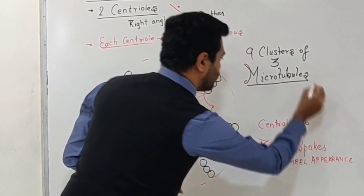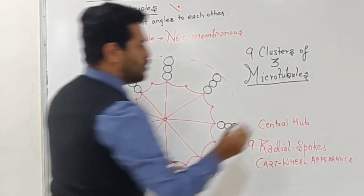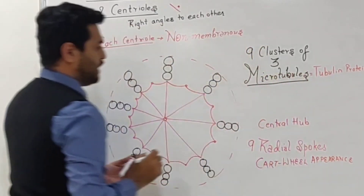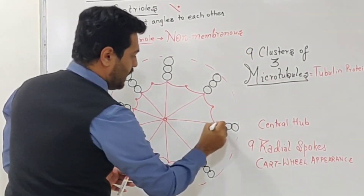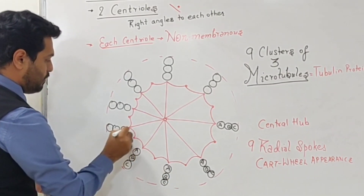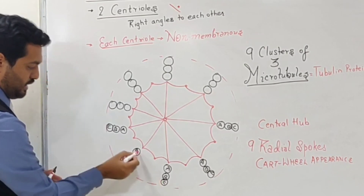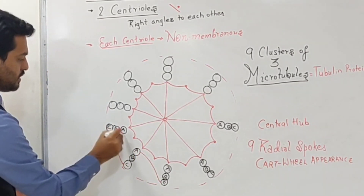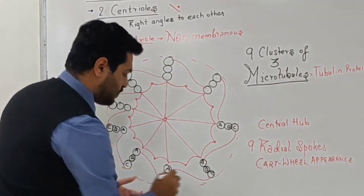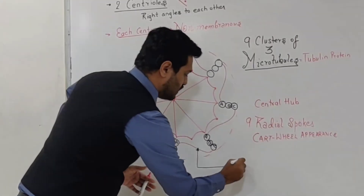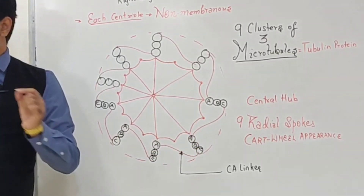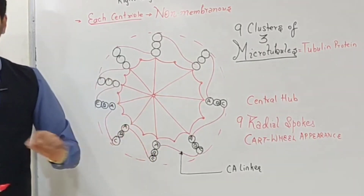You need to remember that the protein present in microtubules is known as tubulin protein. The microtubules are labeled as A, B, C microtubules. A special feature is that the C microtubule of one cluster combines with the A microtubule of the next cluster. This connecting structure between C and A is known as the CA linker. All labeling is important because NEET exams include diagram-based questions.